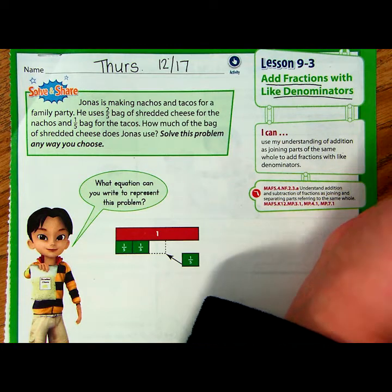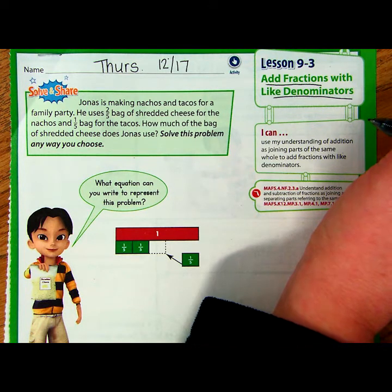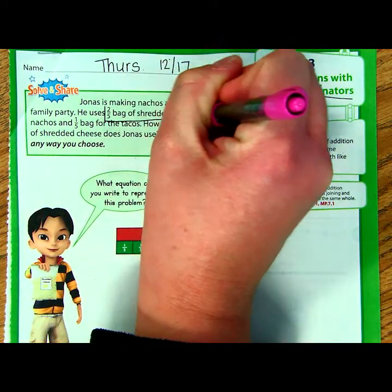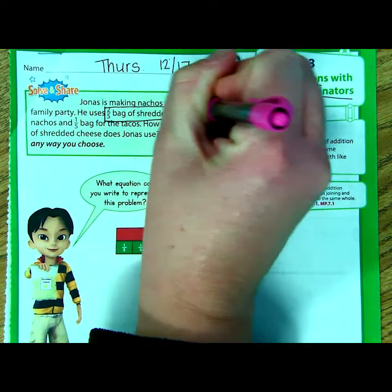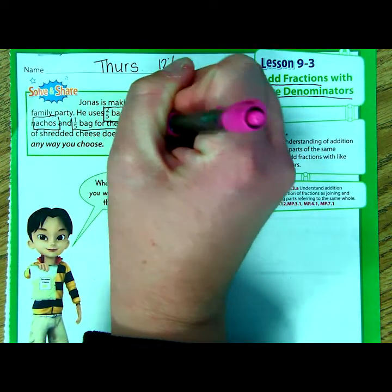Let's look at the first example here. Jonas is making nachos and tacos for a family party. Sounds good. He uses two-fifths of a bag of shredded cheese for the nachos and one-fifth bag for the tacos. So we have two-fifths bag shredded cheese for nachos and one-fifth bag for tacos.